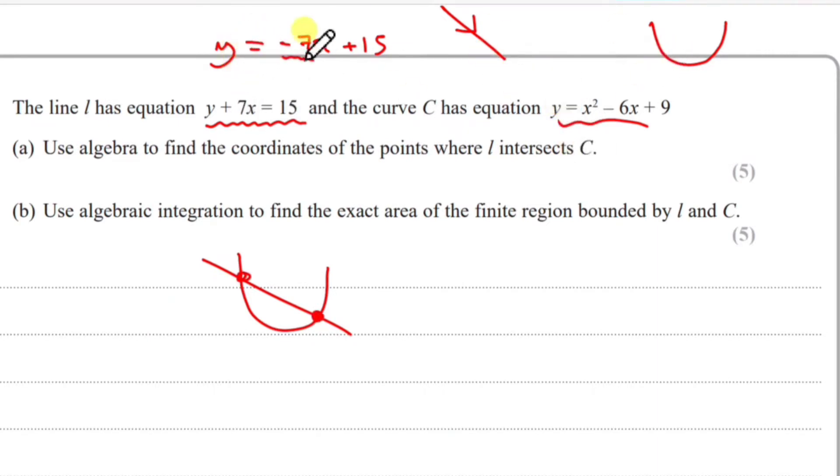Because we made them both equal to y, we can equate them. So we have -7x + 15 = x² - 6x + 9. I'm going to make everything equal to 0, so it looks like a quadratic set to 0.